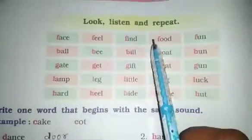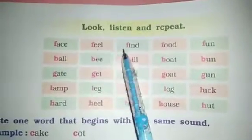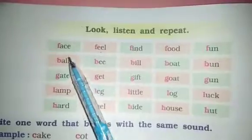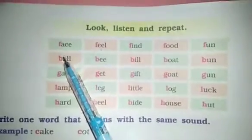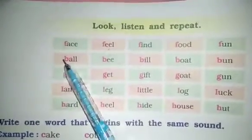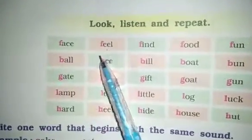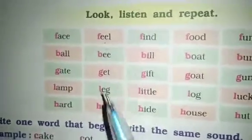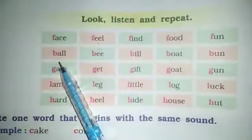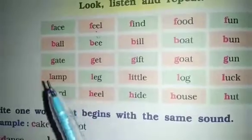Now look, listen and repeat. Hame yeh dhek rahe hai — choosing color se dhiye huye, toh first letter sabke same hai. Toh ham jab uska pronunciation karein tab hame first letter ka pronunciation same hona chahiye. Jaise flash, fill — pho se start, ya f se: find, food, fun. Isi tara yeh b se: ball, bee, bill, bought and bun.